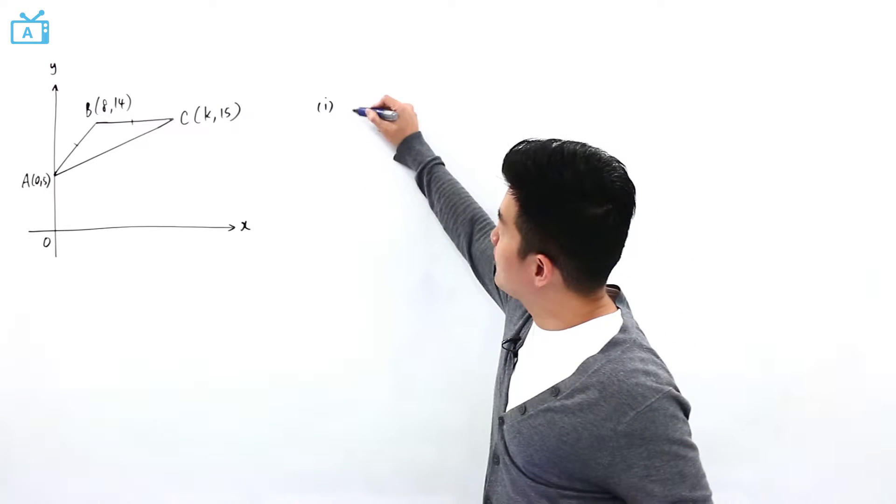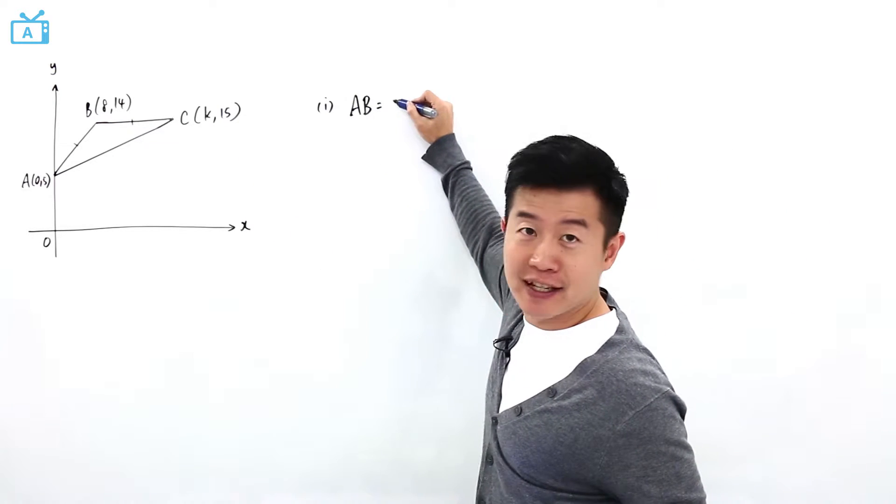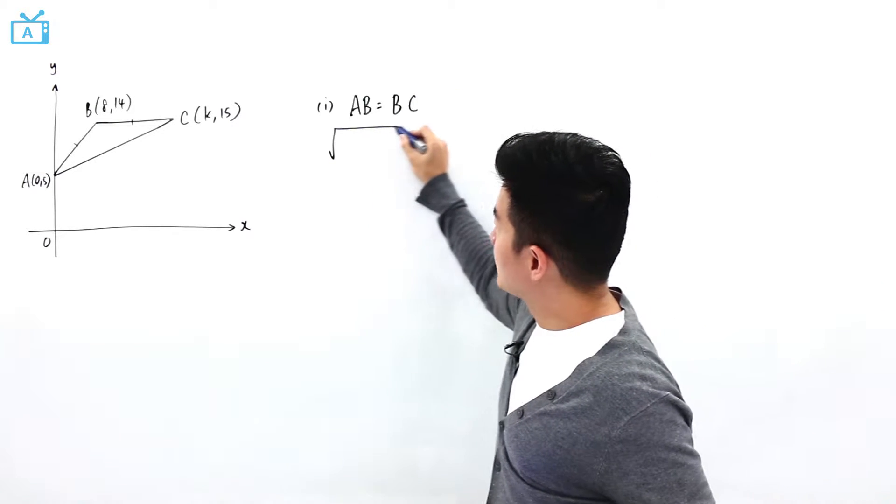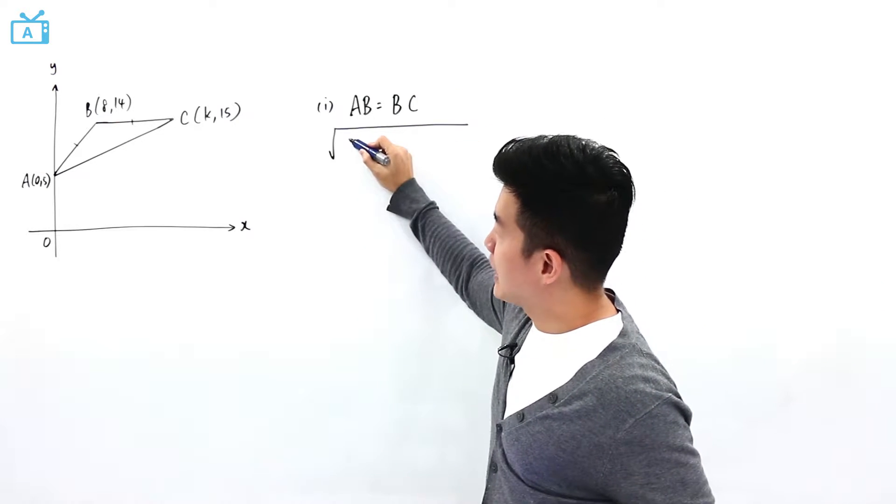Given to us that the distance AB is the same as the distance BC. So applying the distance between two points, this AB is